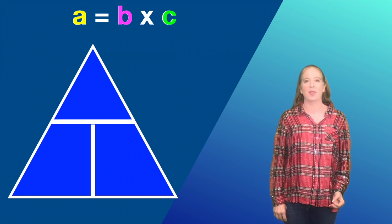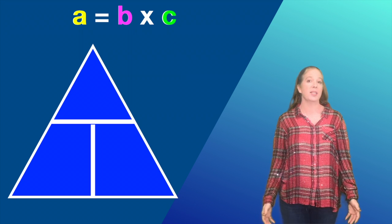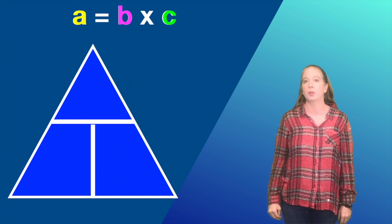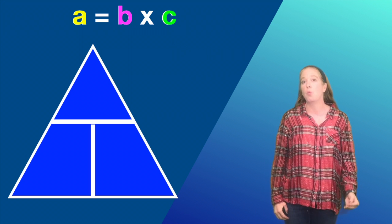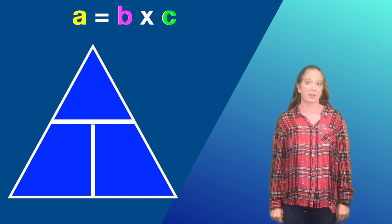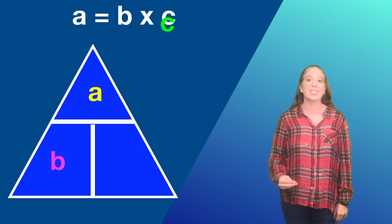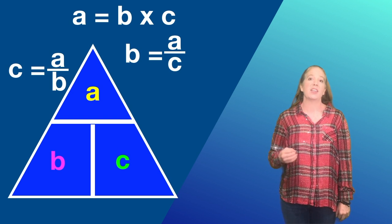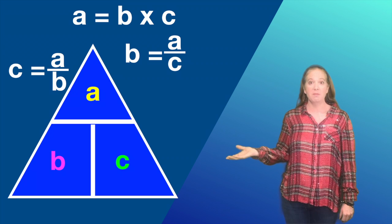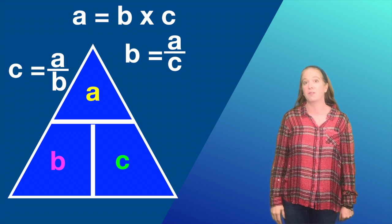In the triangle method, letters that are side-by-side indicate to multiply, and letters that are one on top of the other indicate to divide. By plugging in the information, we can easily see whether we need to divide or multiply with the information we're given.